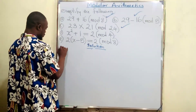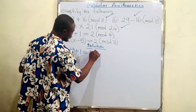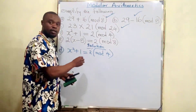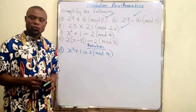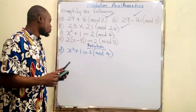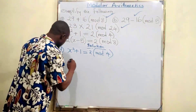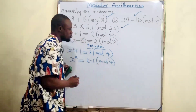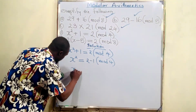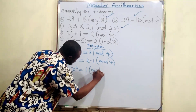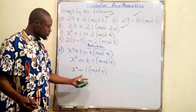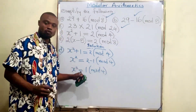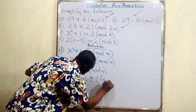Solution four: x squared plus 1 equals 2, all in mode 4. We take the 1 to the right-hand side, where it becomes minus. So x squared equals 2 minus 1 in mode 4, which gives x squared equals 1 in mode 4. The next step is to take the square root of both sides. The square root of x squared is x, and the square root of 1 is plus or minus 1, all in mode 4.